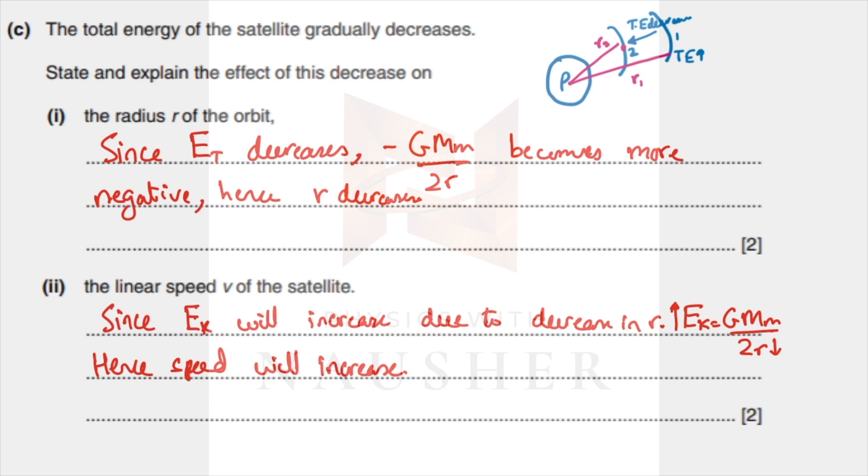What is happening to the linear speed of the satellite? You know kinetic energy is GMm over 2r. You can clearly see that radius has fallen because you're going inwards, so r decreases, kinetic energy increases, and as a result your speed will increase.